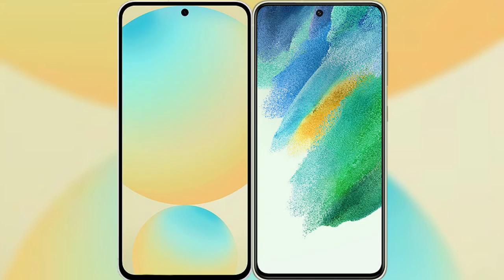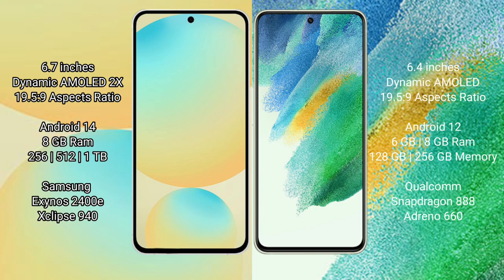I will compare the new Samsung Galaxy S24 Ultra with the Samsung Galaxy S21 Ultra. The Samsung Galaxy S24 Ultra has a 6.7 inch Dynamic AMOLED display. The Samsung Galaxy S21 Ultra has a 6.4 inch Dynamic AMOLED display.